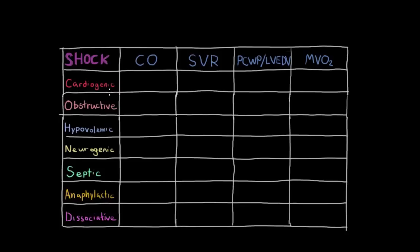So cardiogenic shock is an issue with the heart's ability to pump. So right away we know that cardiac output is going to be decreased pretty severely depending on how severely the heart muscle is impaired. With a decreased cardiac output, the blood vessels are going to clamp down. And so you'll have an elevated systemic vascular resistance in an attempt to return blood back to the heart and restore blood pressure.